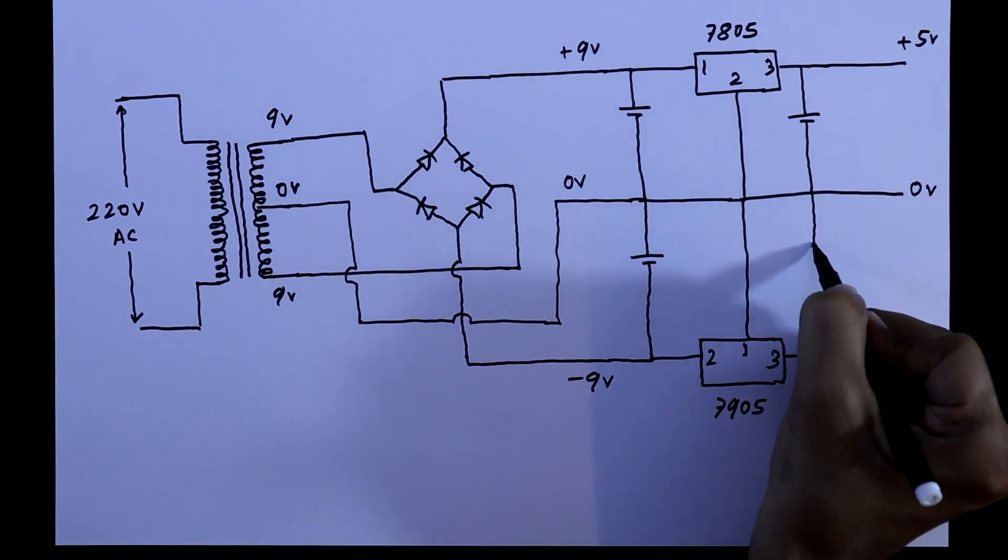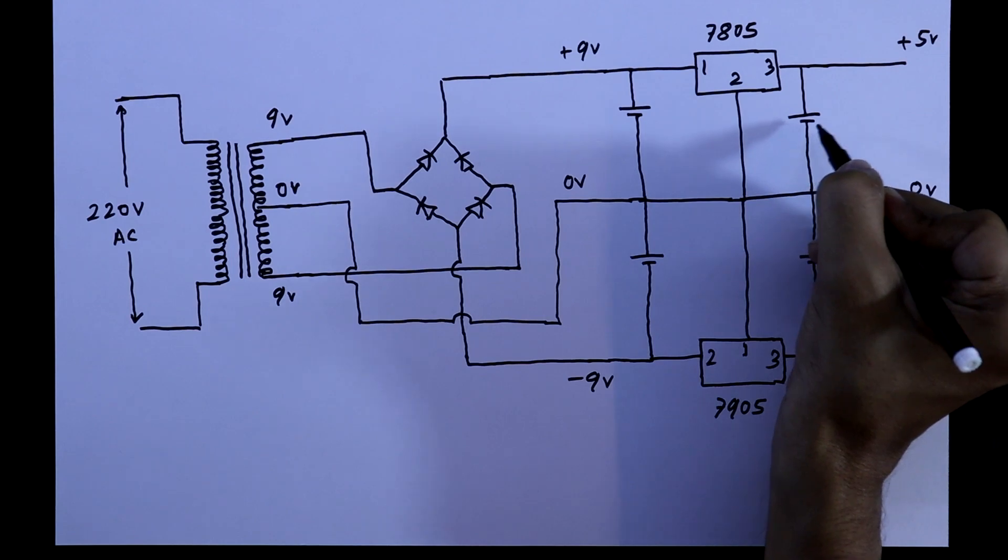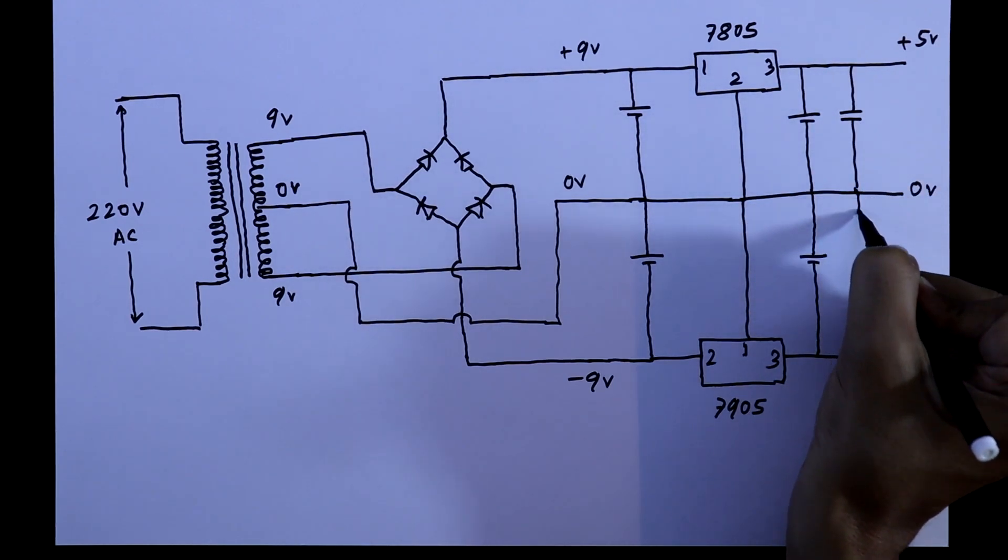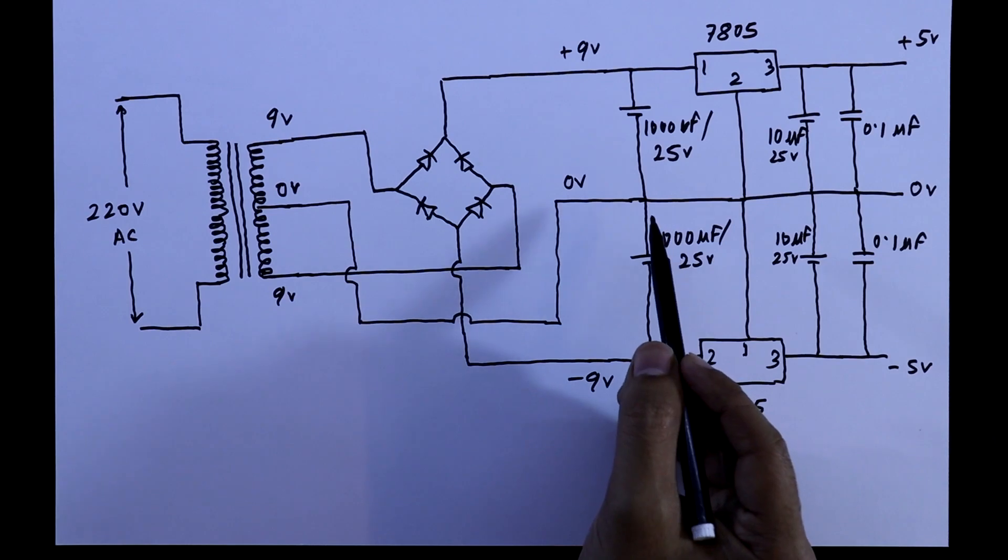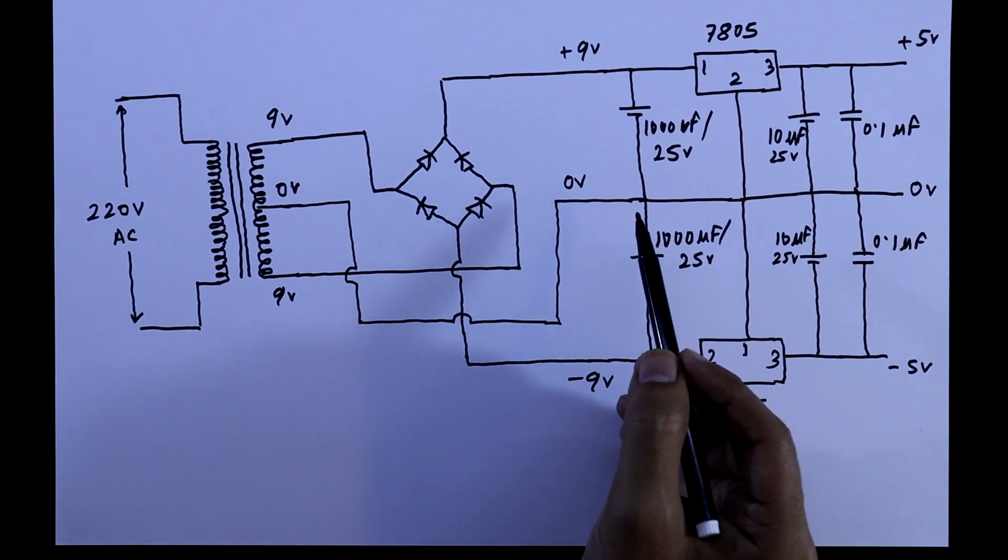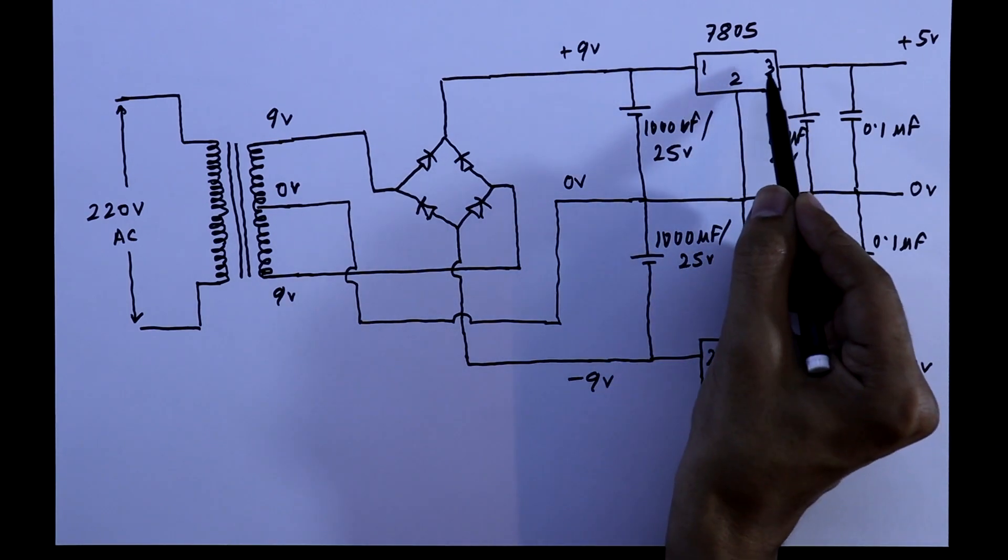But we have to connect two more capacitors. This is electrolytic and this is ceramic. This capacitor is connected in parallel to reject the low frequency noise before the IC and after the IC.